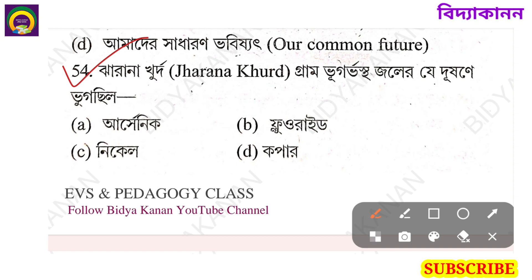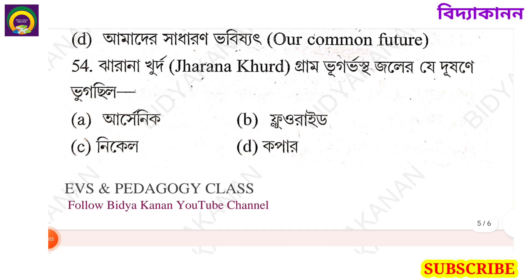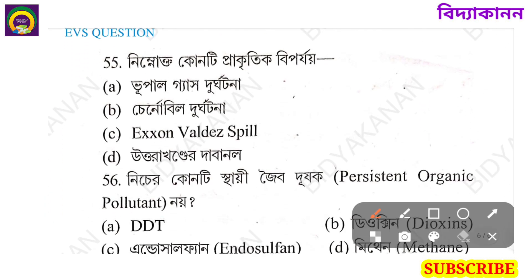Question 52: Jarana Khurdo — Jarana Book — French disease. Question 53: which of the following is a natural disaster? Options include Bhopal gas disaster, Chernobyl disaster, Exxon Valdez oil spill, Uttarakhand forest fire. Answer: Uttarakhand forest fire — dawanal.